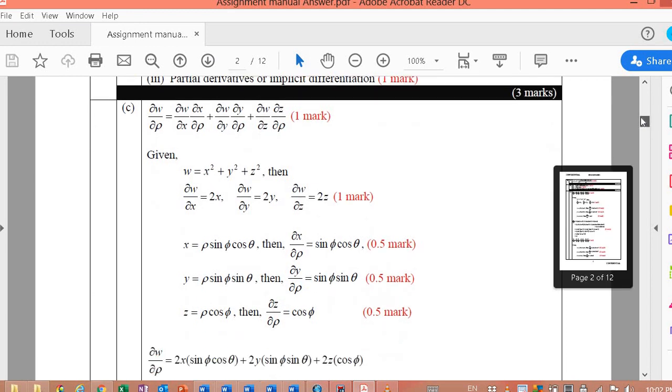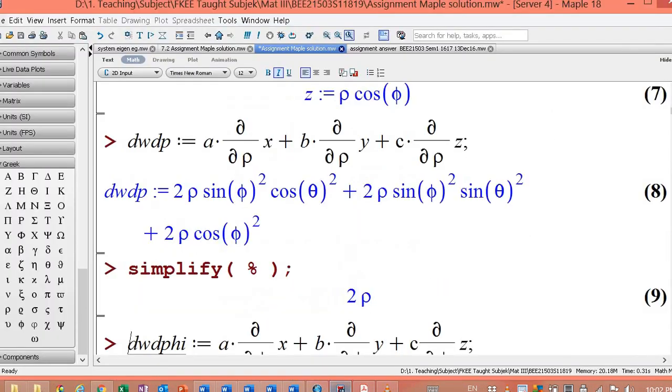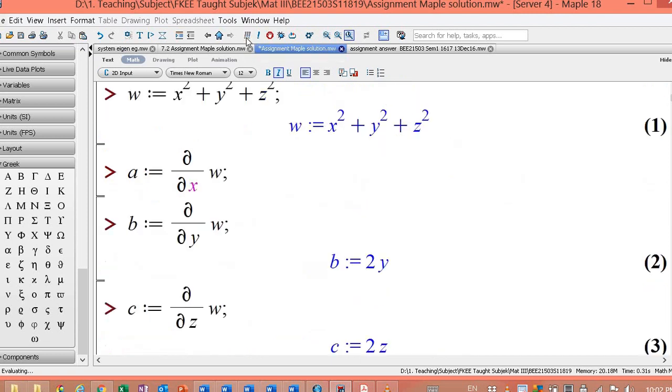Let's simplify this one, the answer is actually two rho. This is done manually, the answer is two rho. Percent actually takes the latest output here. If you want to execute the entire worksheet, just press this one.